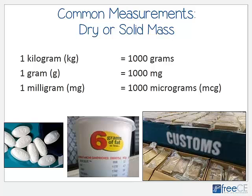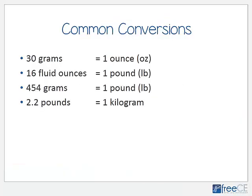We can easily convert between units by knowing their relationships: one kilogram equals one thousand grams; one gram equals one thousand milligrams; and one milligram equals one thousand micrograms. So the largest unit is the kilogram and the smallest is the microgram.